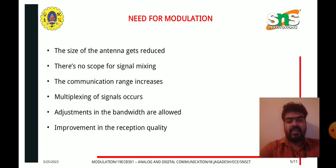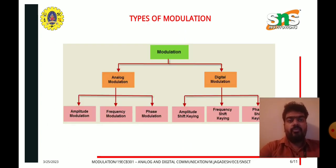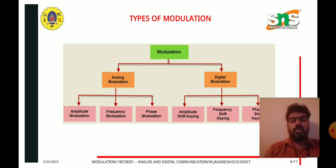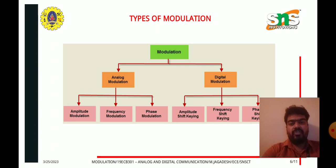There are two types of modulation: analog modulation and digital modulation. Analog modulation has three types — Amplitude Modulation (AM), Frequency Modulation (FM), and Phase Modulation (PM). Digital modulation also has three types — Amplitude Shift Keying (ASK), Frequency Shift Keying (FSK), and Phase Shift Keying (PSK).